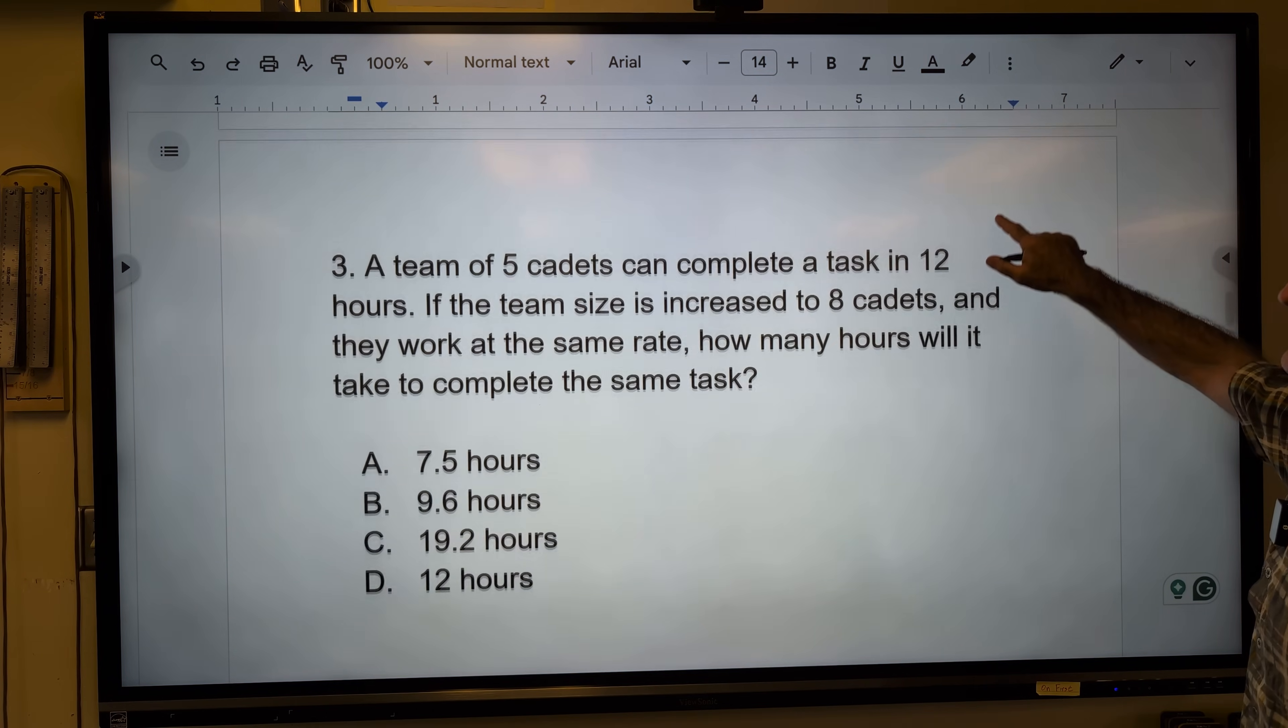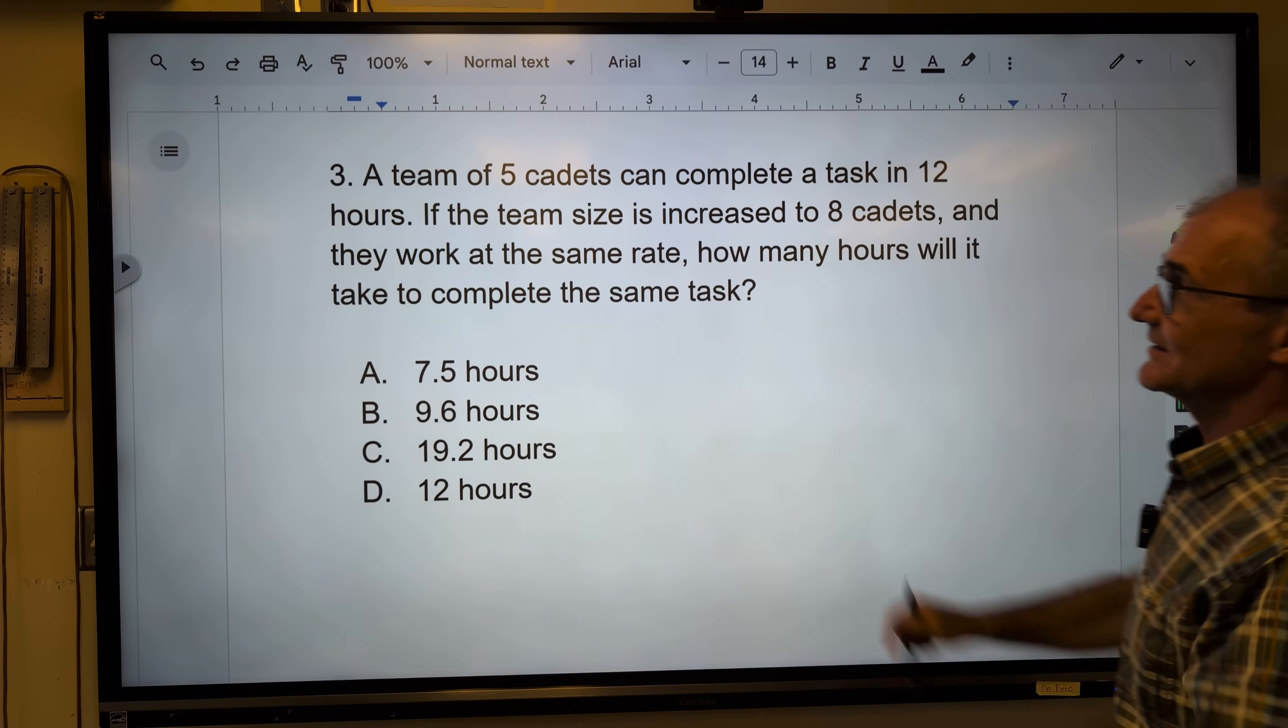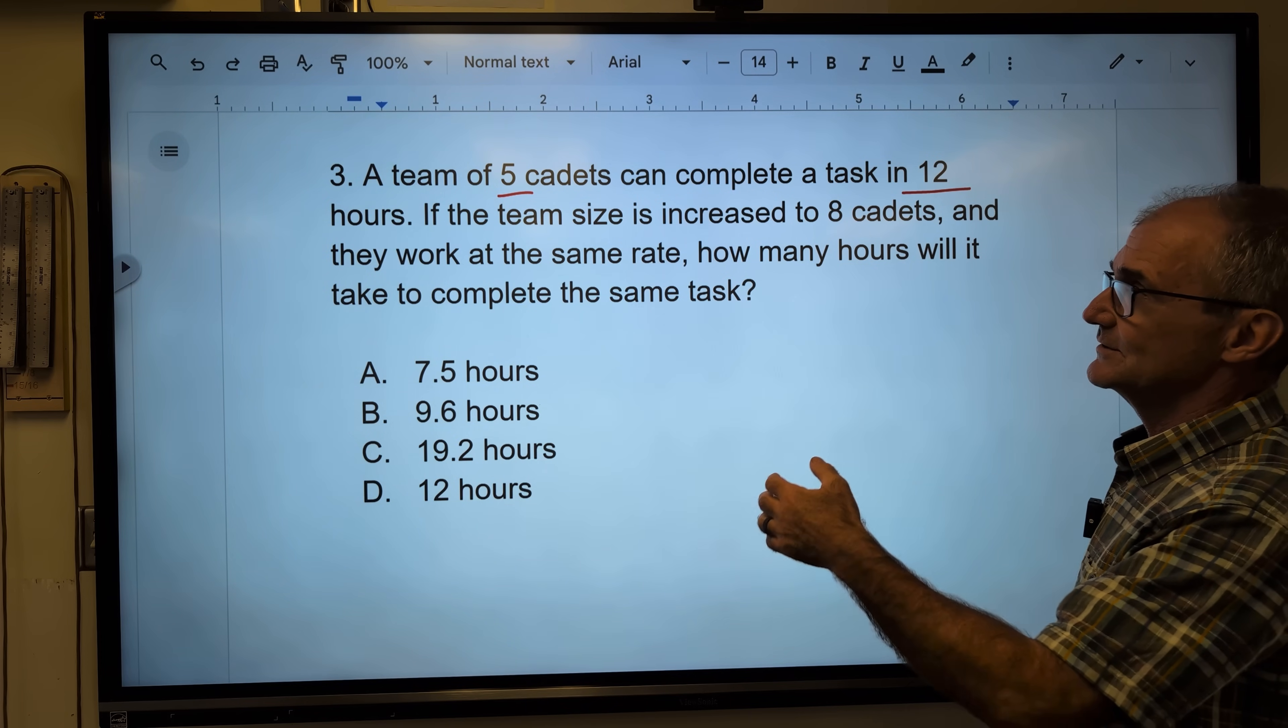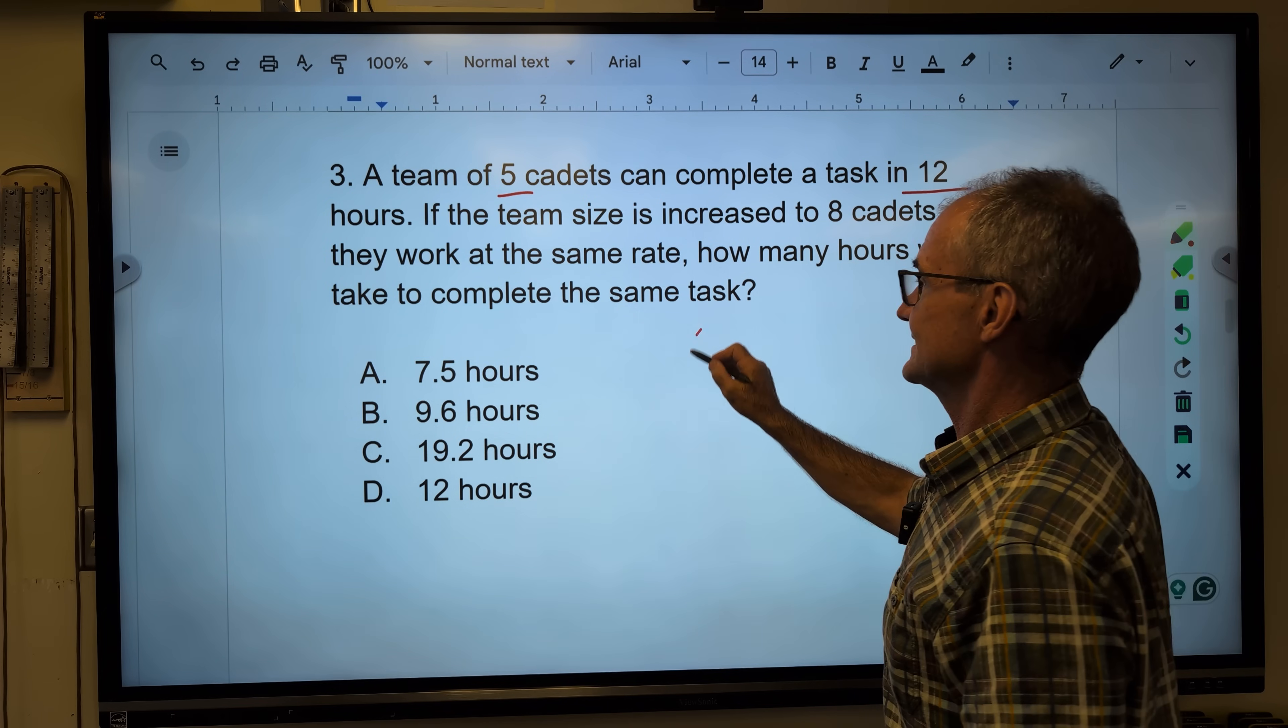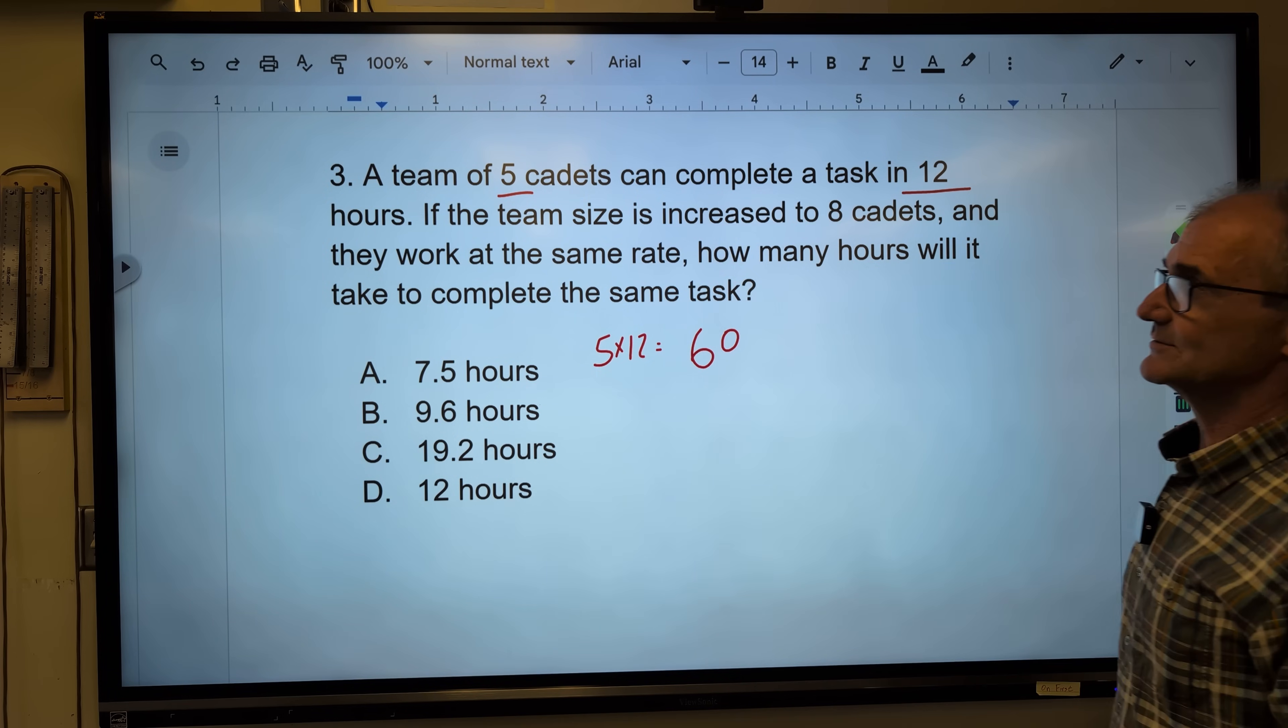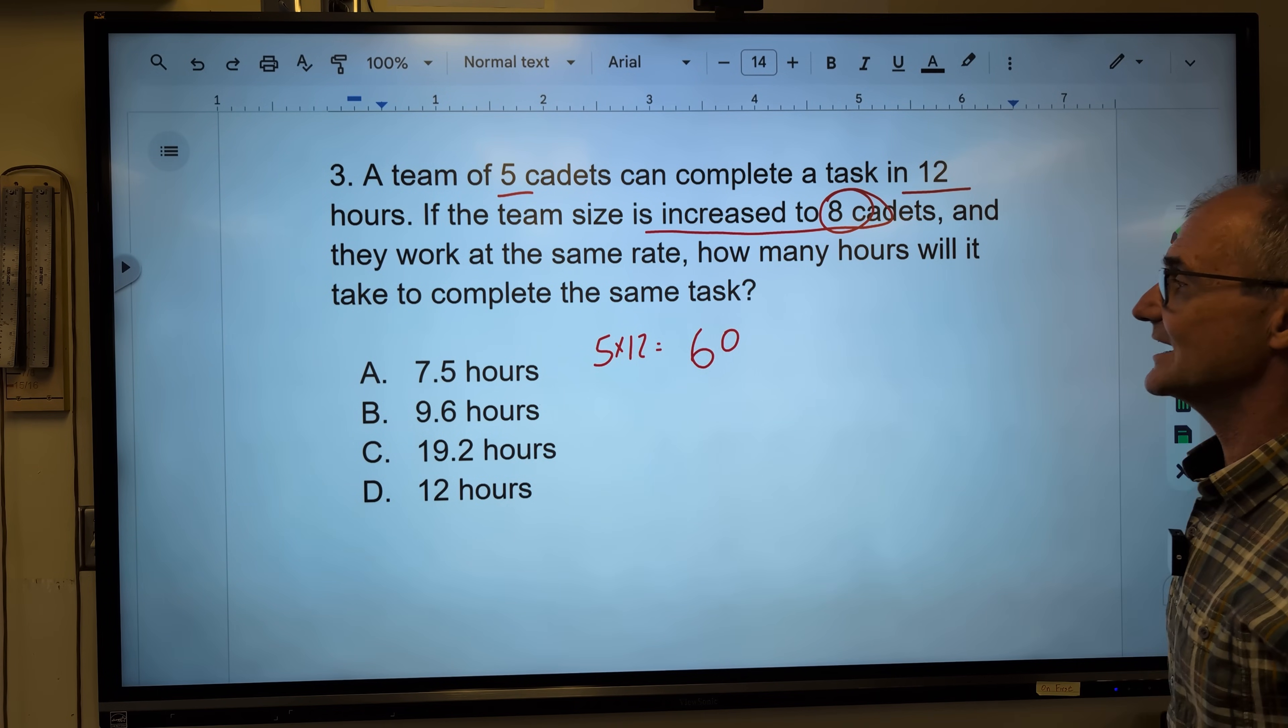Problem number three, go ahead and pause the video, give it a try. I think this one's actually kind of hard. A team of five cadets can complete a task in 12 hours. So that's five people and 12 hours. I'm going to do 5 times 12 to get 60 man hours. So the number of people times the number of hours to get the total number of man hours.